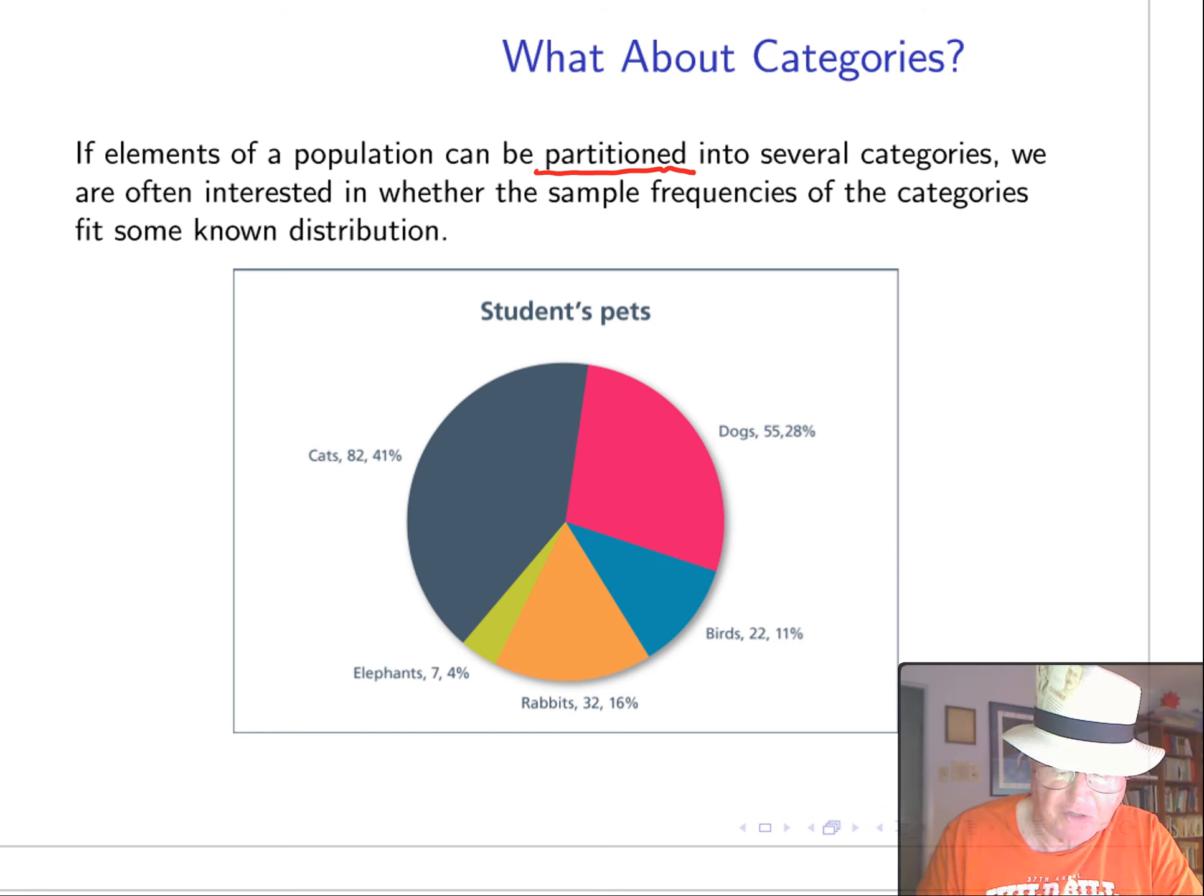Here's a distribution of student pets: cats, dogs, birds, rabbits, and elephants. Must be students from India.